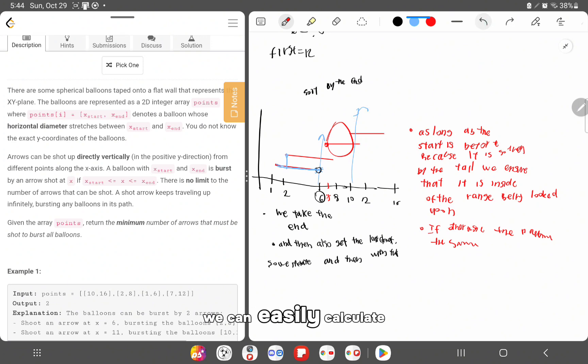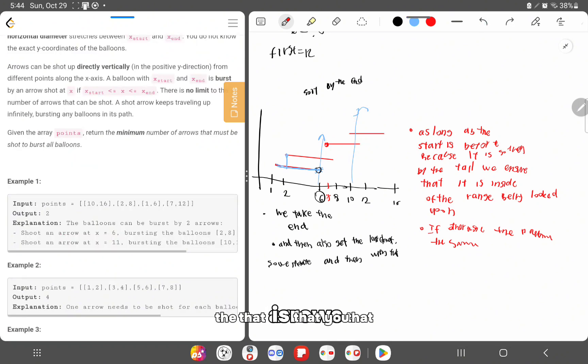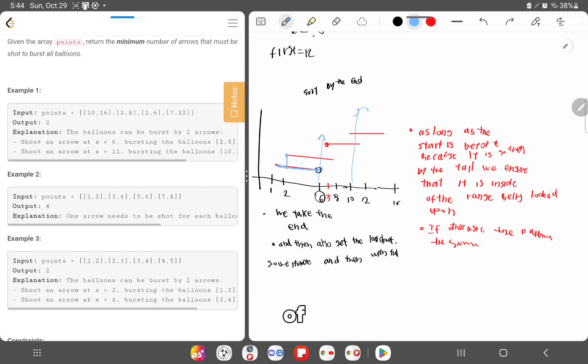Having that, we can easily calculate the arrows that we need. The idea is that you just throw an arrow vertically and you want to hit as many balloons as possible. And the idea is to return the minimum amount of arrows you need in order to explode or to pin all the other balloons.